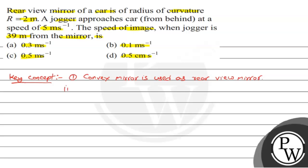The second key concept is the mirror formula. The mirror formula is: 1/V plus 1/U is equal to 1/F, where V is the distance of image, U is the distance of object, and F is the focal length of the mirror.